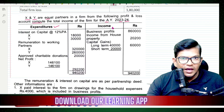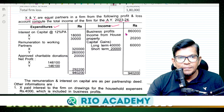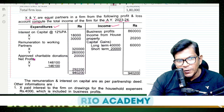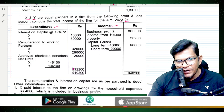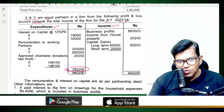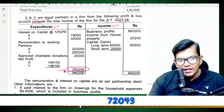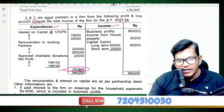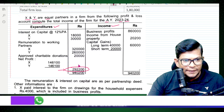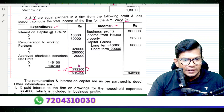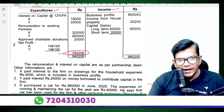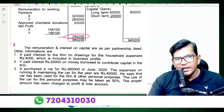Here we have income. The net profit is 2,92,200. Net profit is 2,92,200.